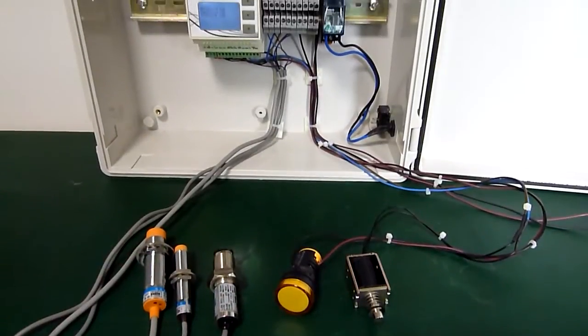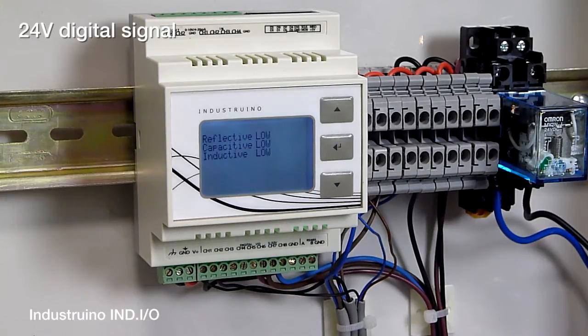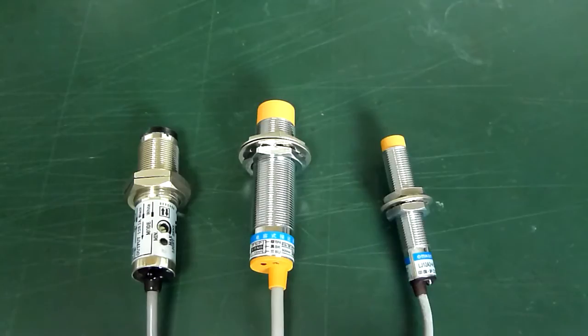In this video we will be showing how you can use 8 channels of the 24V Indio I/O to quickly build your automation systems. As an example of a typical input device we have here 3 PNP sensors.